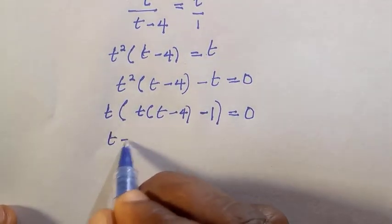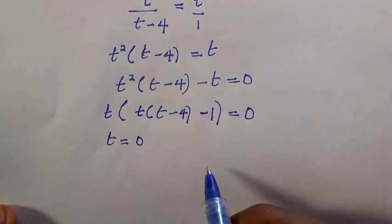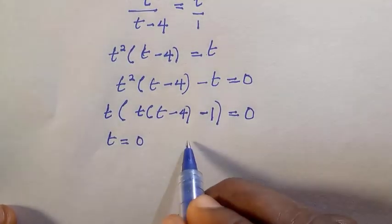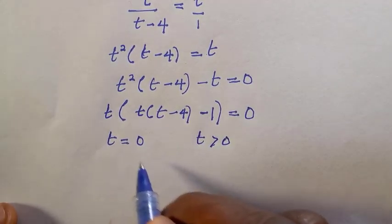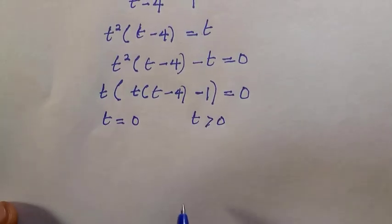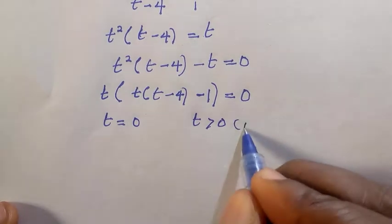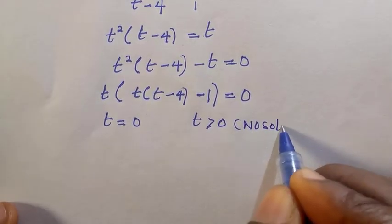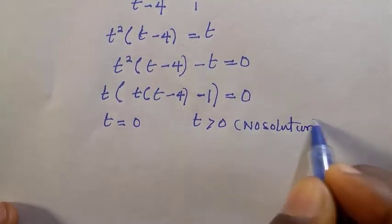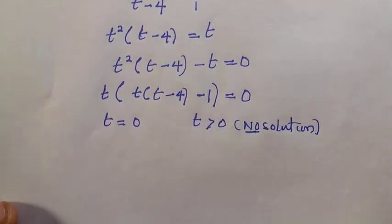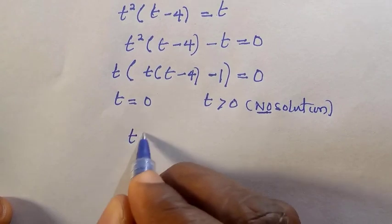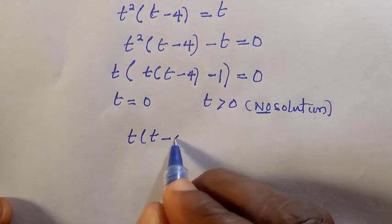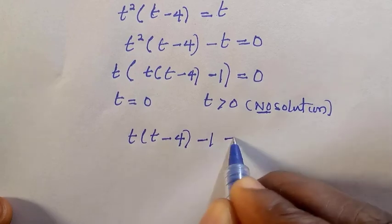So t equals zero, or the other factor equals zero. At t equals zero, we should know this is not valid because our condition requires t greater than zero — we do not consider t less than or equal to zero. So t equals zero gives no solution, and we go for the second factor.